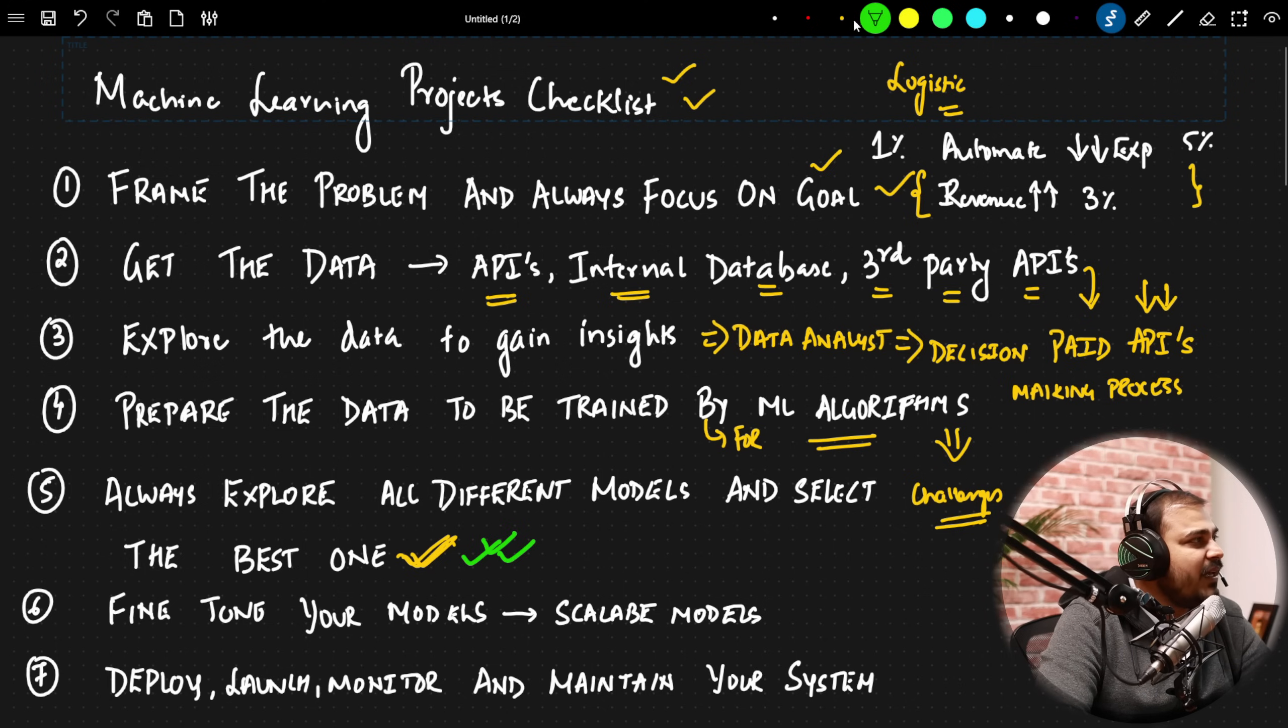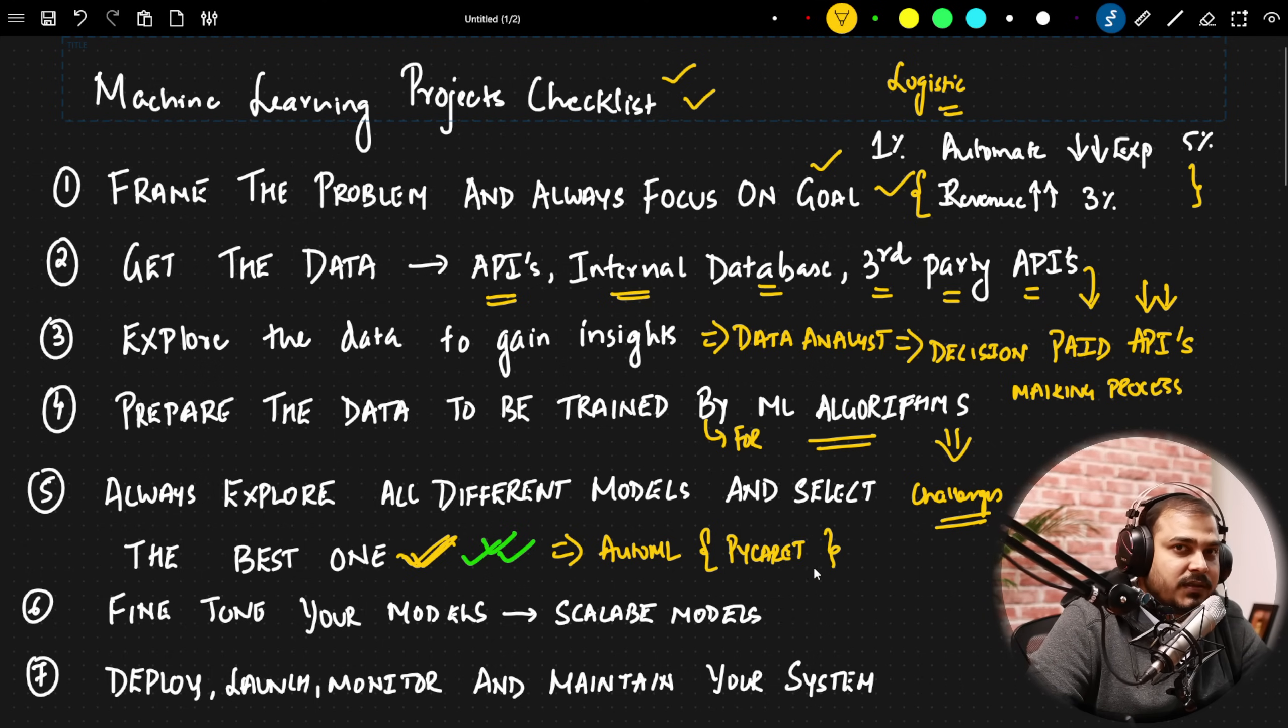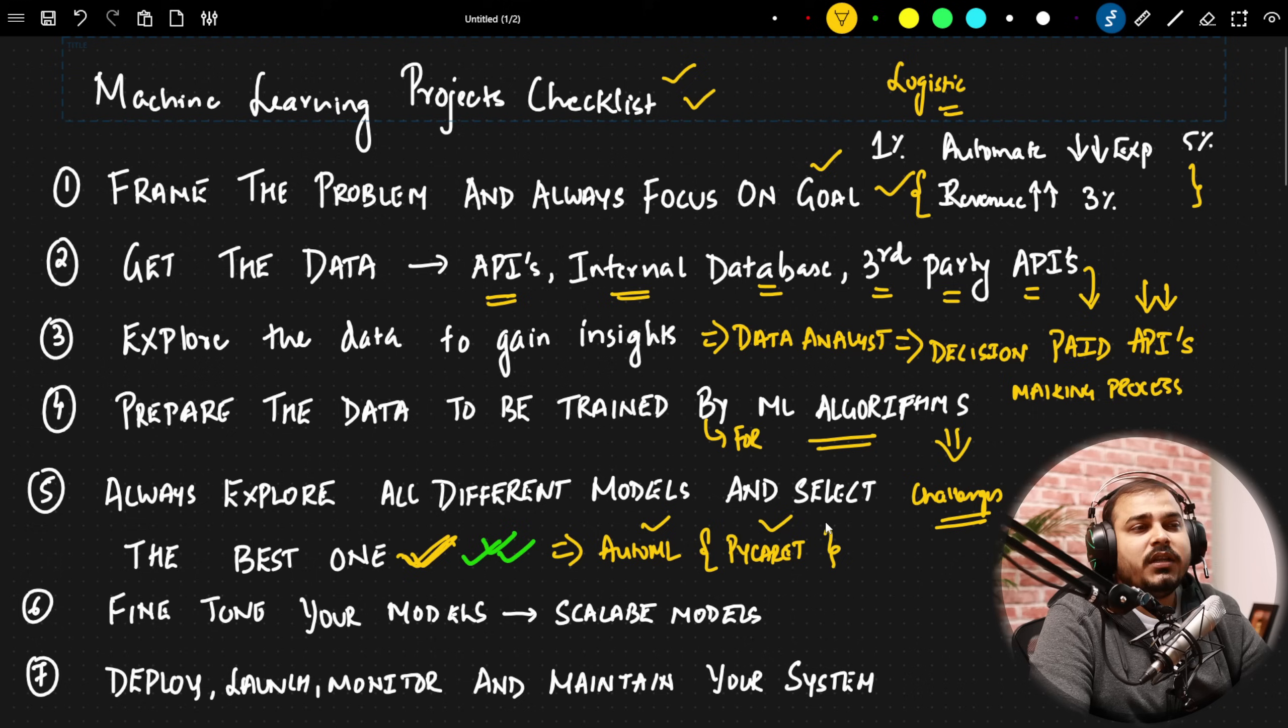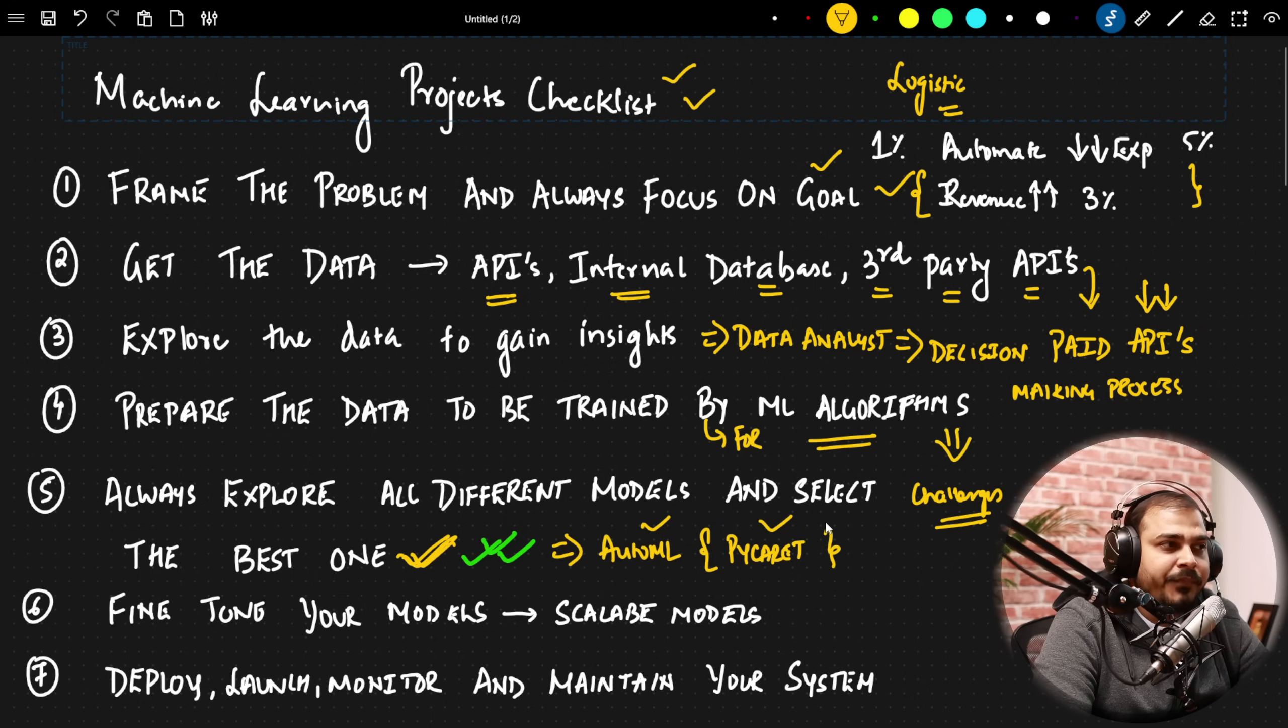Explore all the different models and select the best one. And this entire thing, you will be getting an idea from AutoML. If you have heard about AutoML, which is an automated machine learning library, this also tries different different algorithms. Or you can also take example of PyCaret. These are some kind of AutoML libraries. And in this, all the automated machine learning libraries, they try to use all the different algorithms that are available. And then based on that, they select the best one.